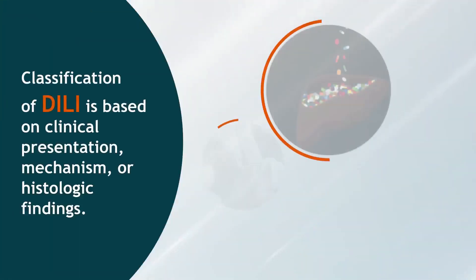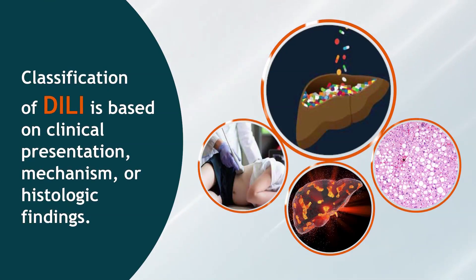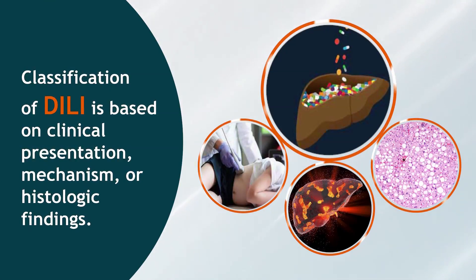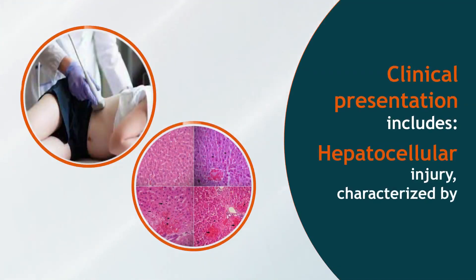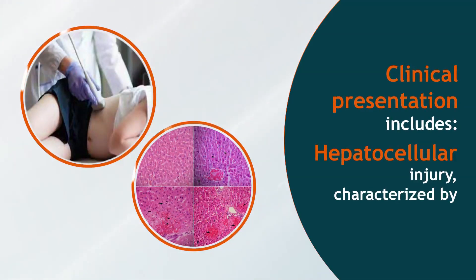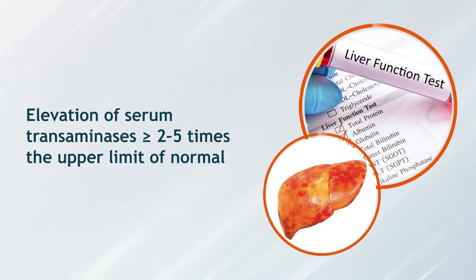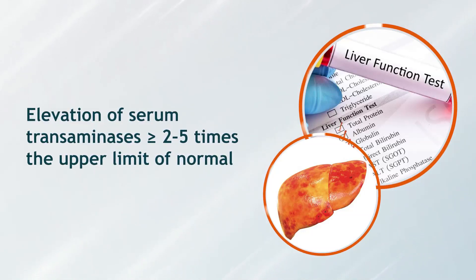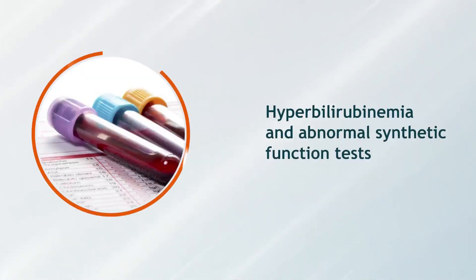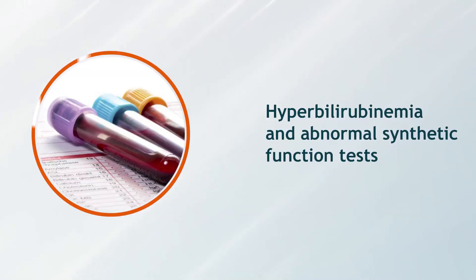Types of DILI: Classification of DILI is based on clinical presentation, mechanism, or histologic findings. Clinical presentation includes hepatocellular injury, characterized by elevation of serum transaminases greater than or equal to 2 to 5 times the upper limit of normal, hyperbilirubinemia, and abnormal synthetic function tests.